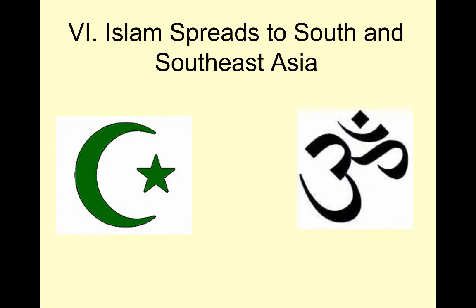Welcome back. This is our second lecture in the post-classical period on the spread of Islam. In the first lecture we talked about how Islam grew and spread in Southwest Asia. These notes are going to talk about the spread of Islam into South and Southeast Asia. We're going to see two very distinct cultures and religions come together — Hinduism on the right, which is polytheistic with thousands of gods, and Islam on the left, which is monotheistic. Does that cause conflict? Does that cause cultural diffusion and accommodation? We will find out.